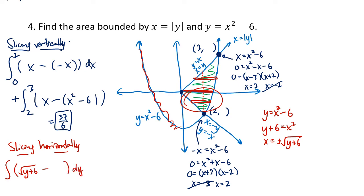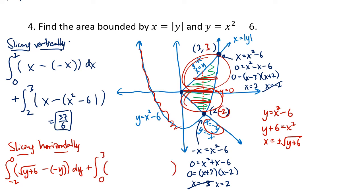The bottom half of the absolute value function is x equals negative y. For the lower area, we integrate from y equals negative 2 to y equals 0. For the upper half area, we integrate from 0 to y equals 3, with the square root of y plus 6 on the right and x equals y on the left. These integrals require a substitution because of the square root of y plus 6, but working them out still gives 37 over 6.